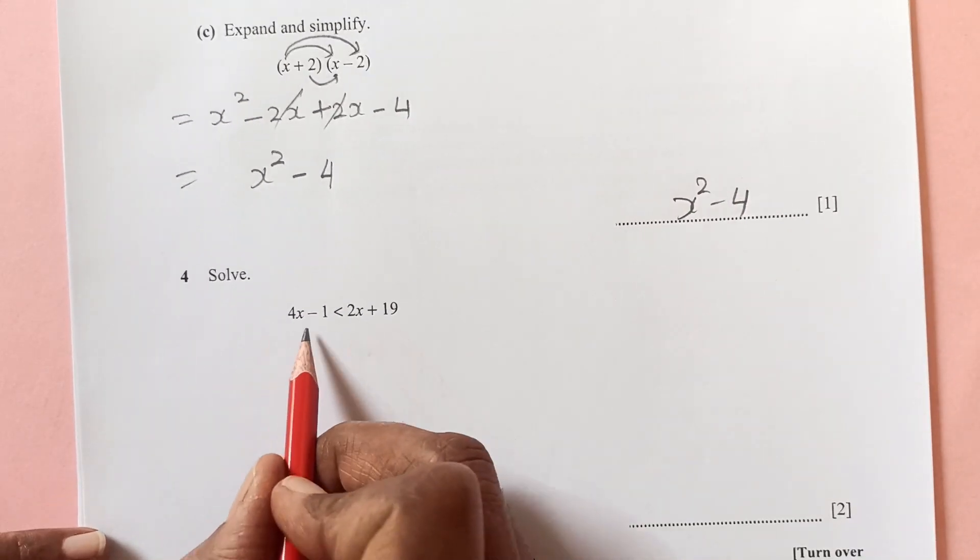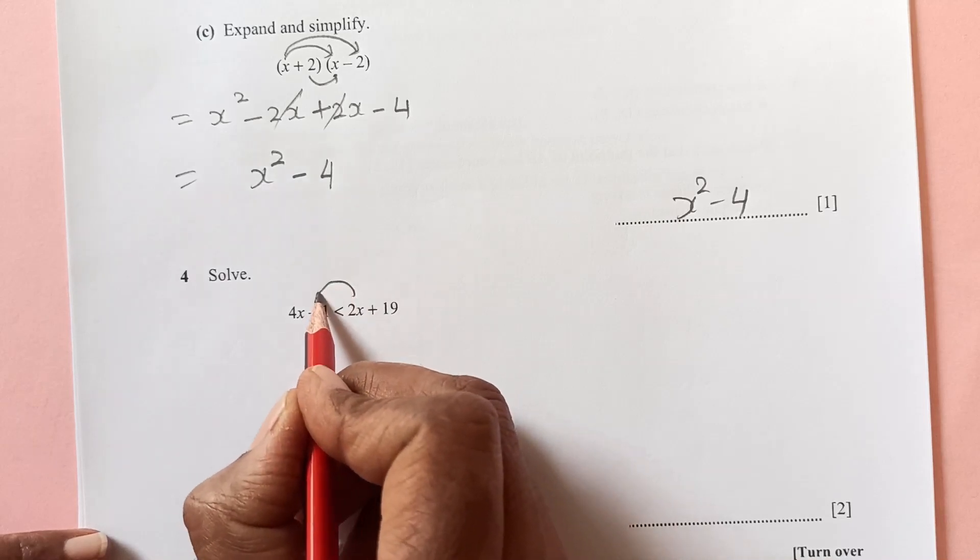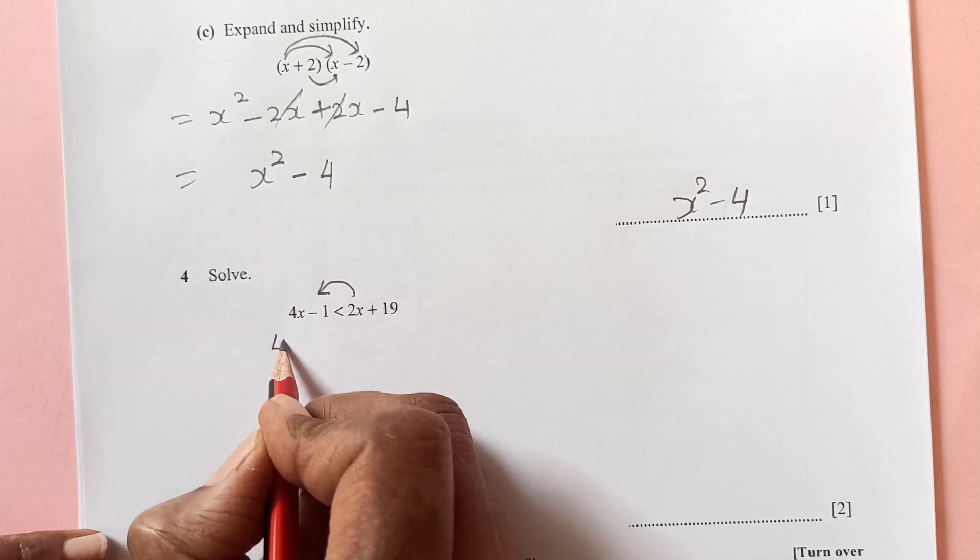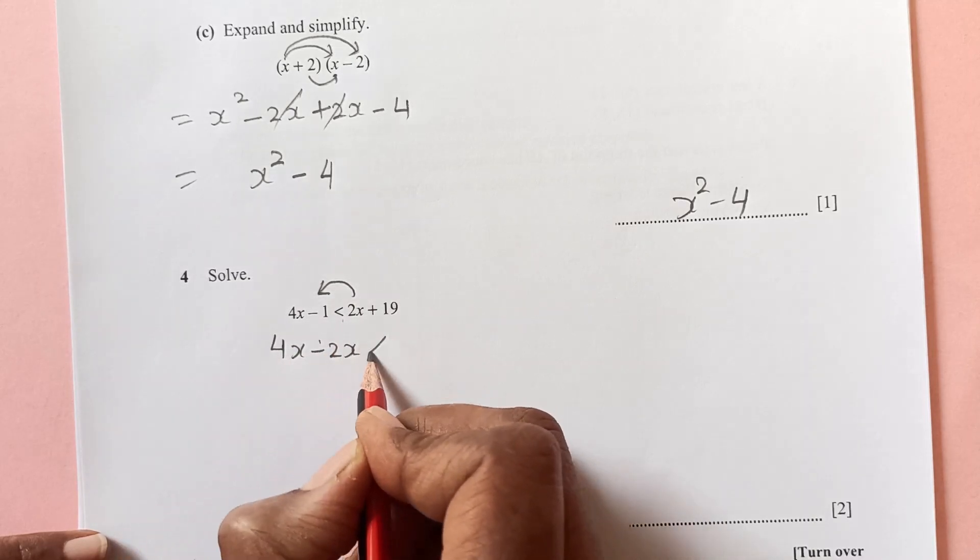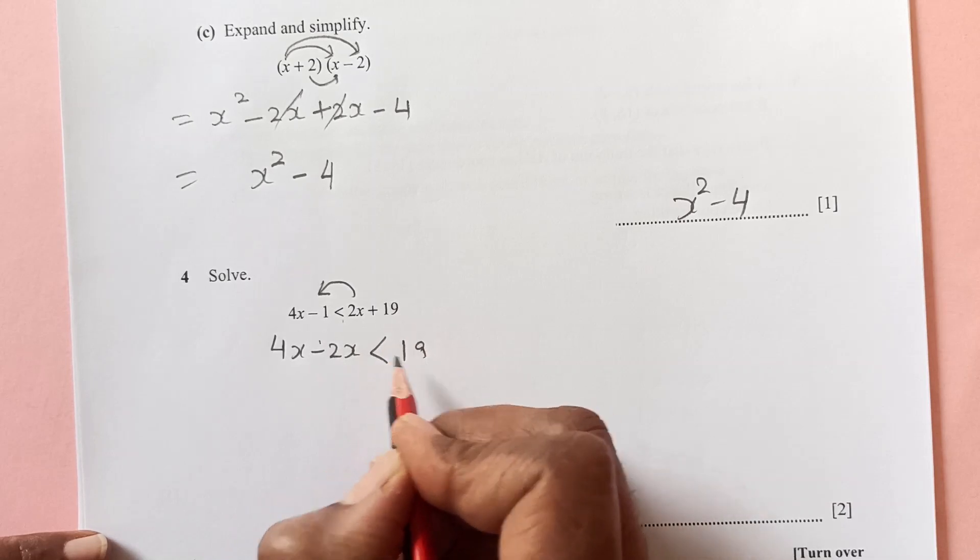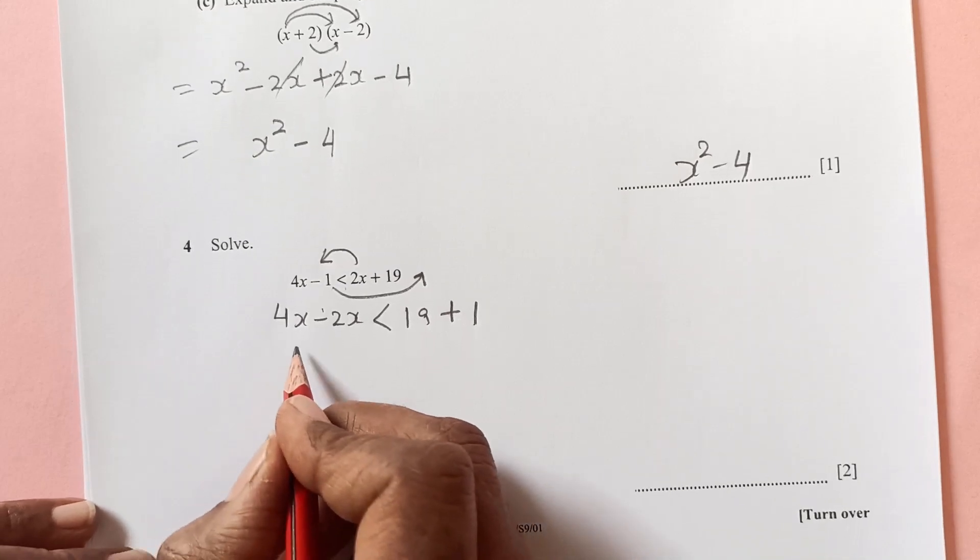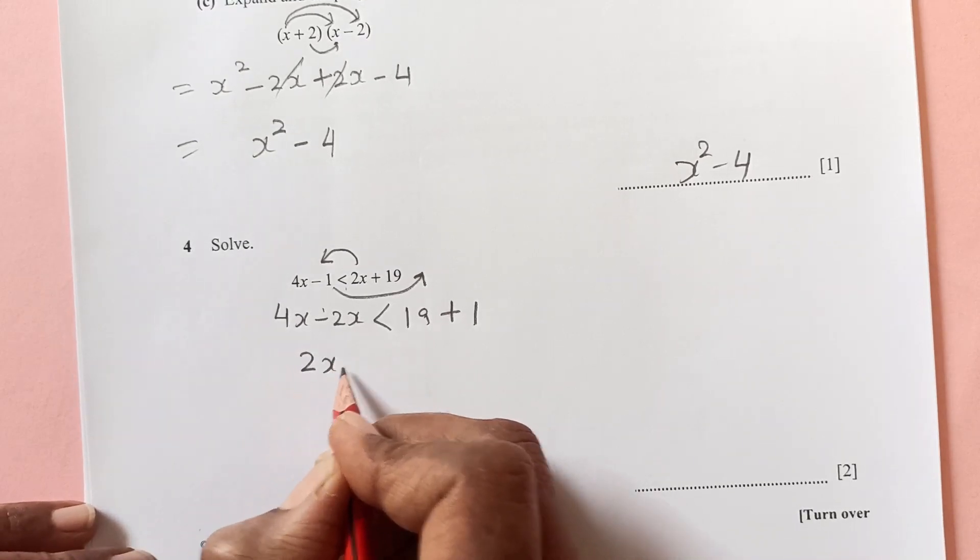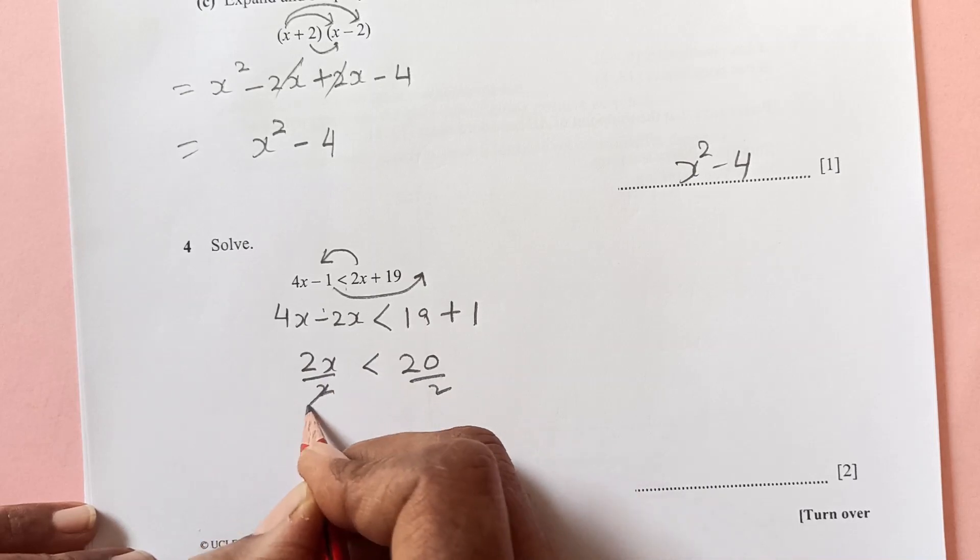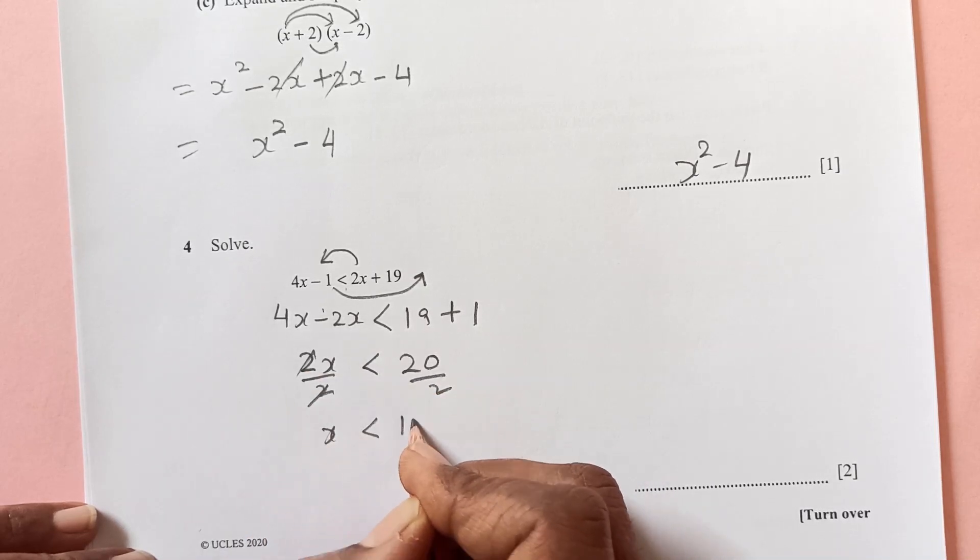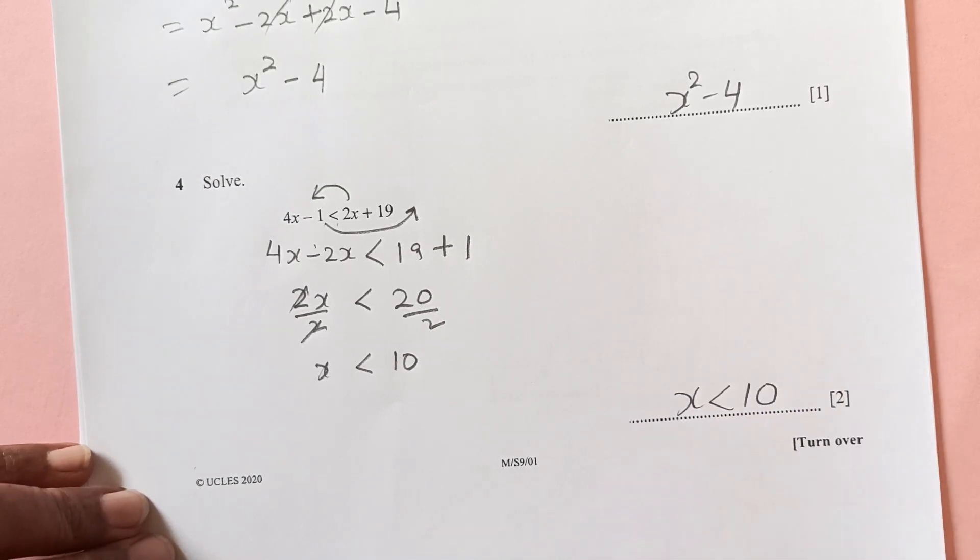Now solve this. 4x minus 1 less than 2x plus 19. Shift 2x on other side, 4x minus 2x. The less than sign will remain as it is, 19 is there. Now shift 1 to other side, that is plus 1. 4 minus 2 is 2x less than 20. Divide by 2, so we have x is less than 10.